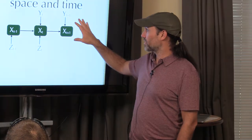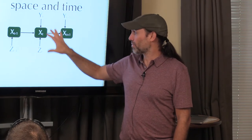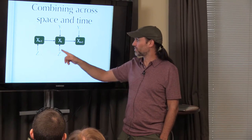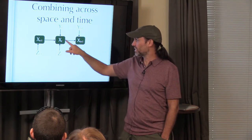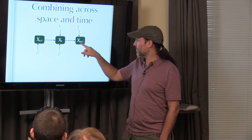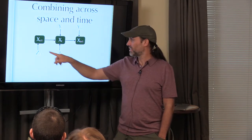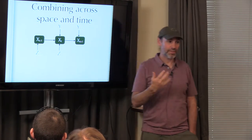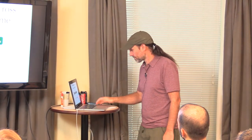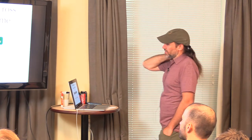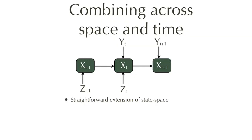The state-space model is very flexible. You can deal with having just one observation type, just the other, or both. When you have both y and z, you have the most constraint on x: the previous x, the next x, y, and z all constraining that state. If all of these are Gaussian, the constraint ends up being the sum of all their precisions. It's straightforward to extend the state-space model to fuse multiple types of observations.